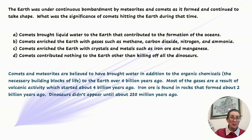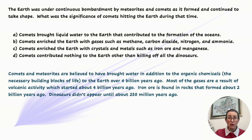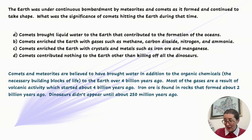Comets and meteorites are believed to have brought water, in addition to organic chemicals — the necessary building blocks of life — to the Earth over 4 billion years ago. Most of the gases are a result of volcanic activity, which started about 4 billion years ago. Iron ore is found in rocks that formed about 2 billion years ago, and dinosaurs didn't appear until 250 million years ago. So, the correct answer here must be A.